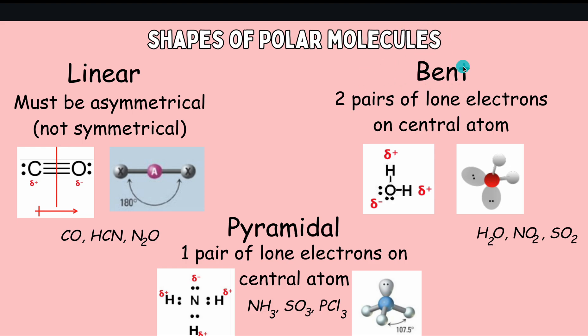Bent molecules will have two pairs of lone electrons on the central atom. The most famous example of a bent molecule is our water. The bent shape of water is what causes it to have all of these unique properties that we experience in everyday life. That central oxygen atom has two lone pairs of electrons, which causes this molecule to look almost bent.